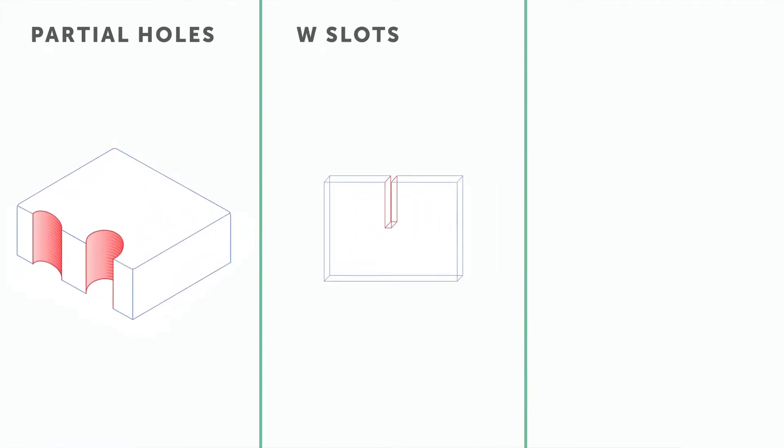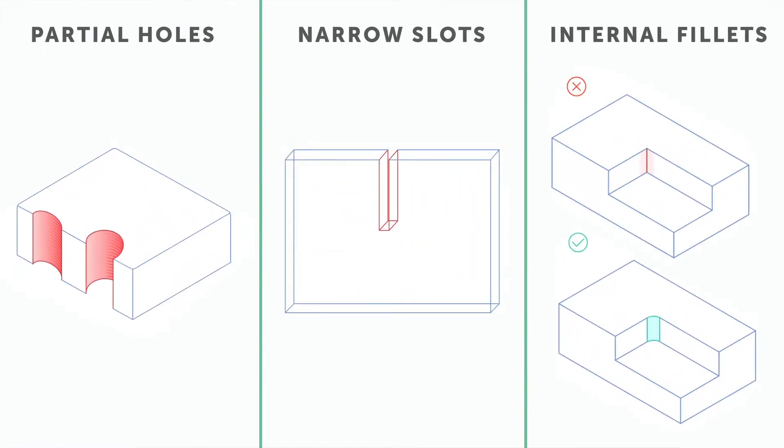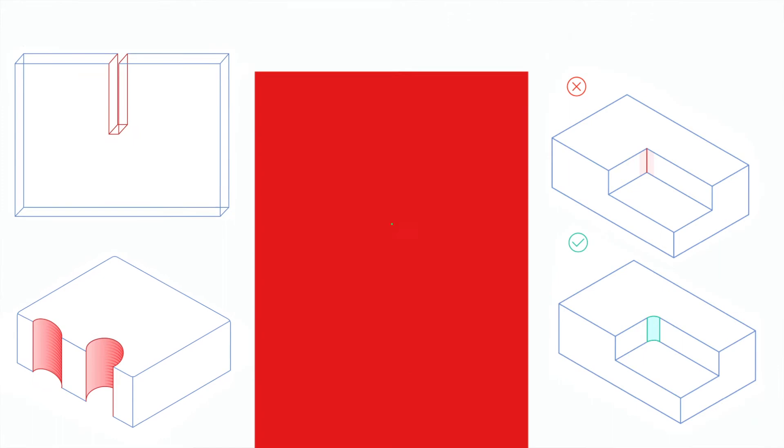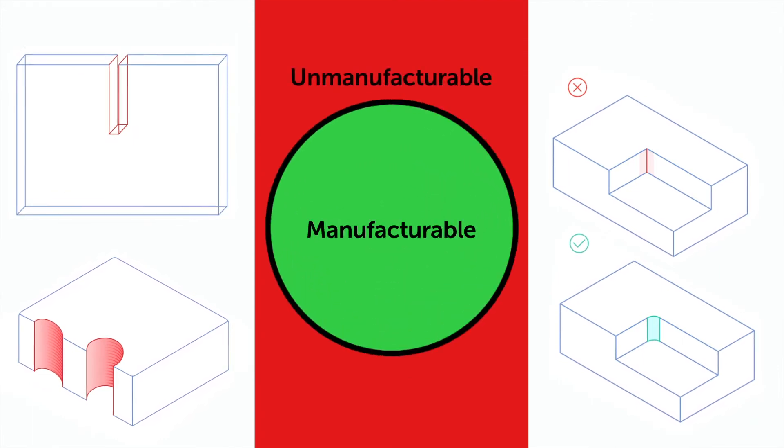The first goal for designing for manufacturability, or DFM, is to make it possible to manufacture your part. Examples of CNC DFM include partial holes, narrow slots, and internal fillets. These rules divide the design space into manufacturable and unmanufacturable zones.